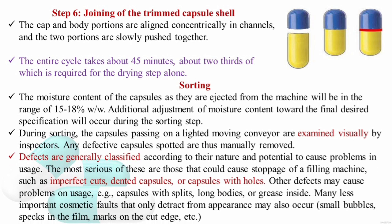Defects are classified according to their nature and potential to cause problems in usage. The most serious defects are those that can cause a stoppage of the filling machine, such as imperfect cuts, tented capsules, and capsules with holes. Other defects — such as capsules with splits, long bodies, and grease inside the cap — may cause problems during usage. Less serious cosmetic faults that only detract from appearance include small bubbles, specks in the film, and marks on the cut edge.